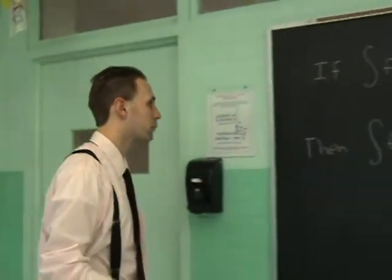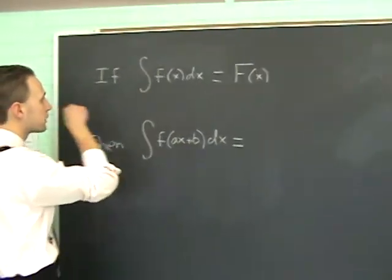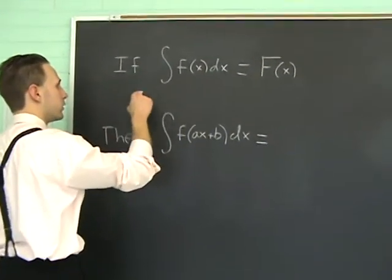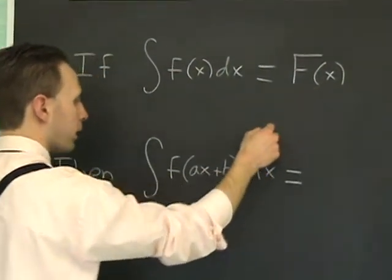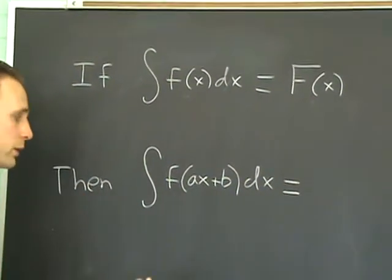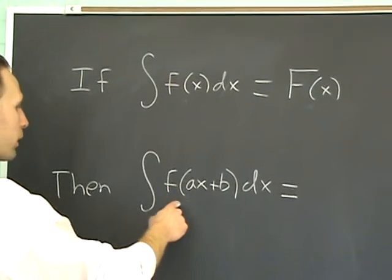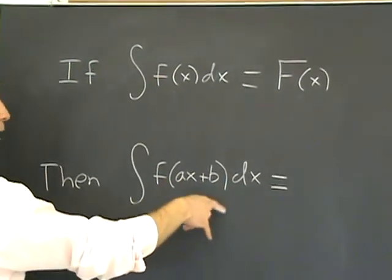In general, the rule can be generalized by, if you know what the anti-derivative of f is, if you know that this is equal to big F, and if you have to anti-differentiate little f only operated on not x, but ax plus b.